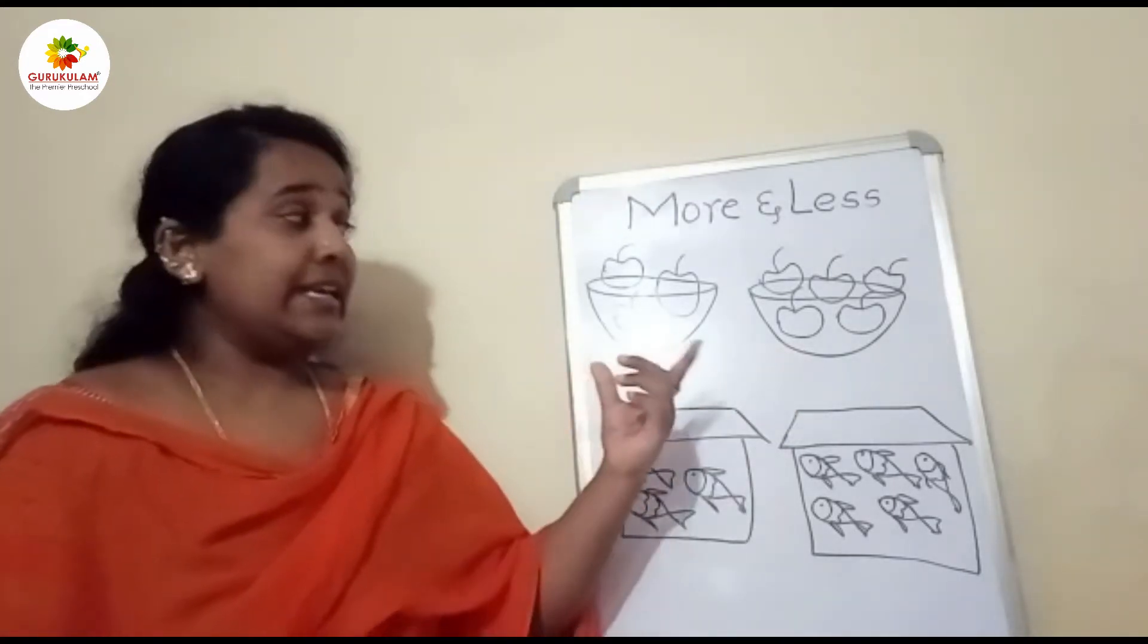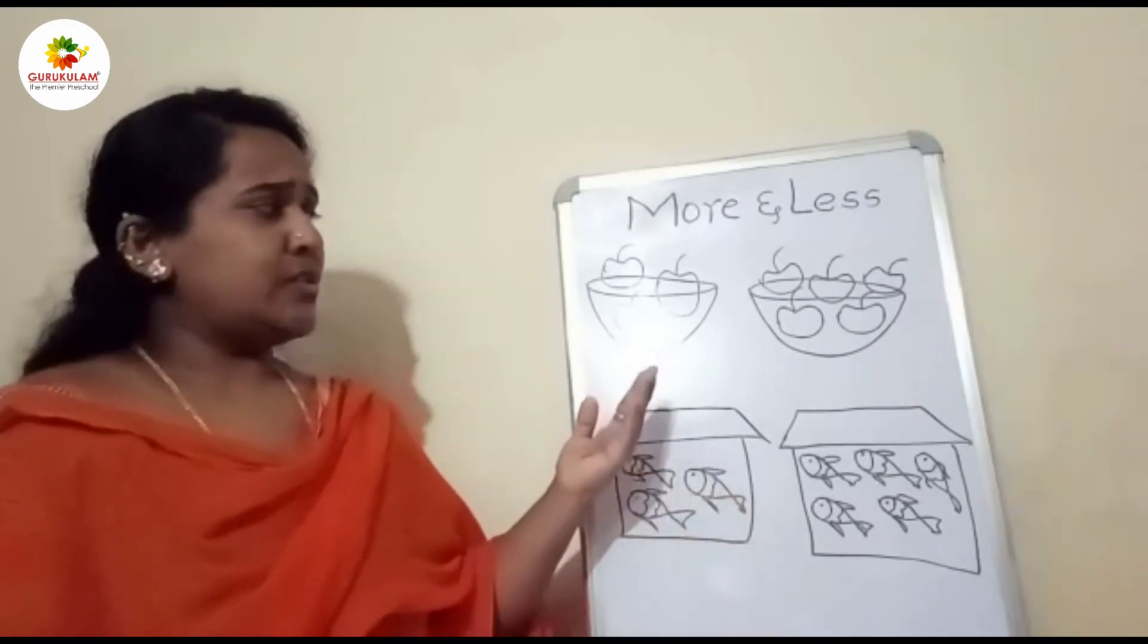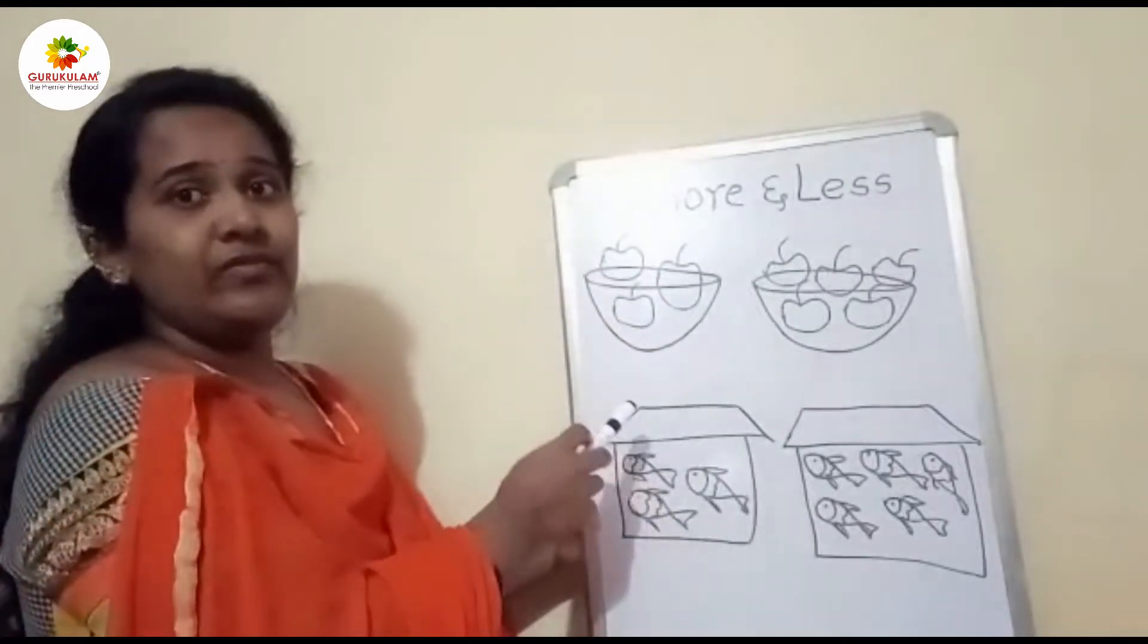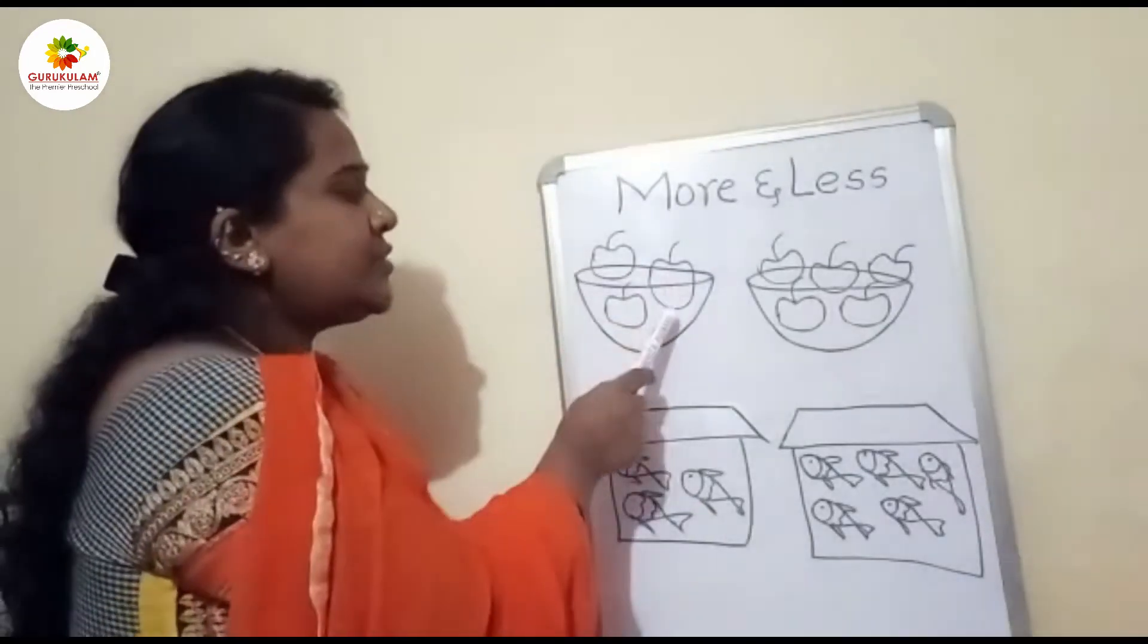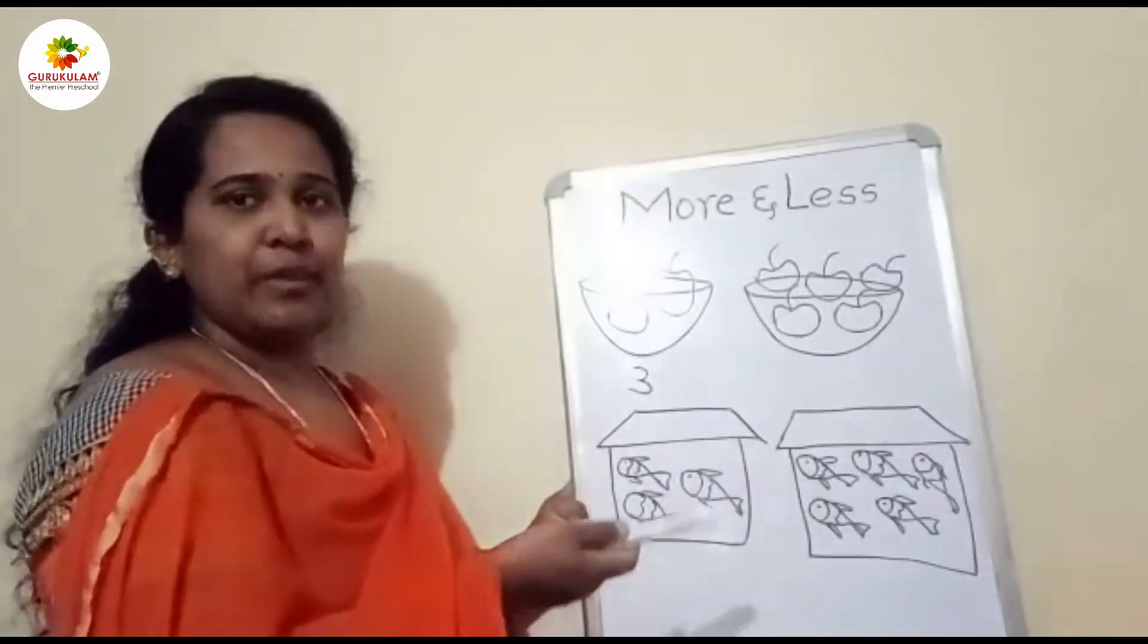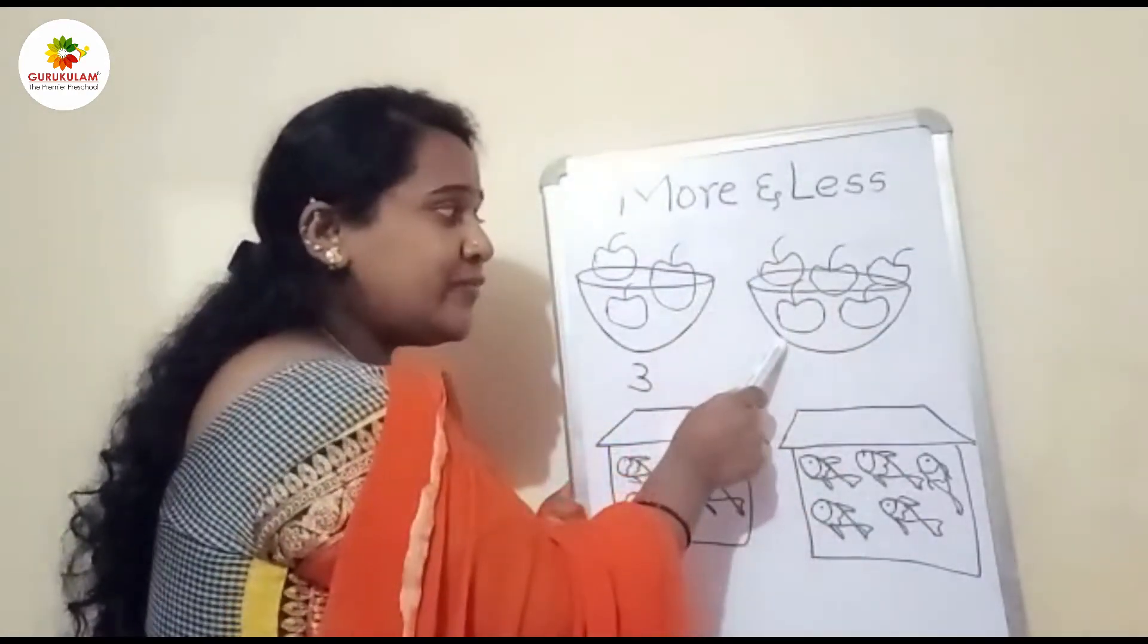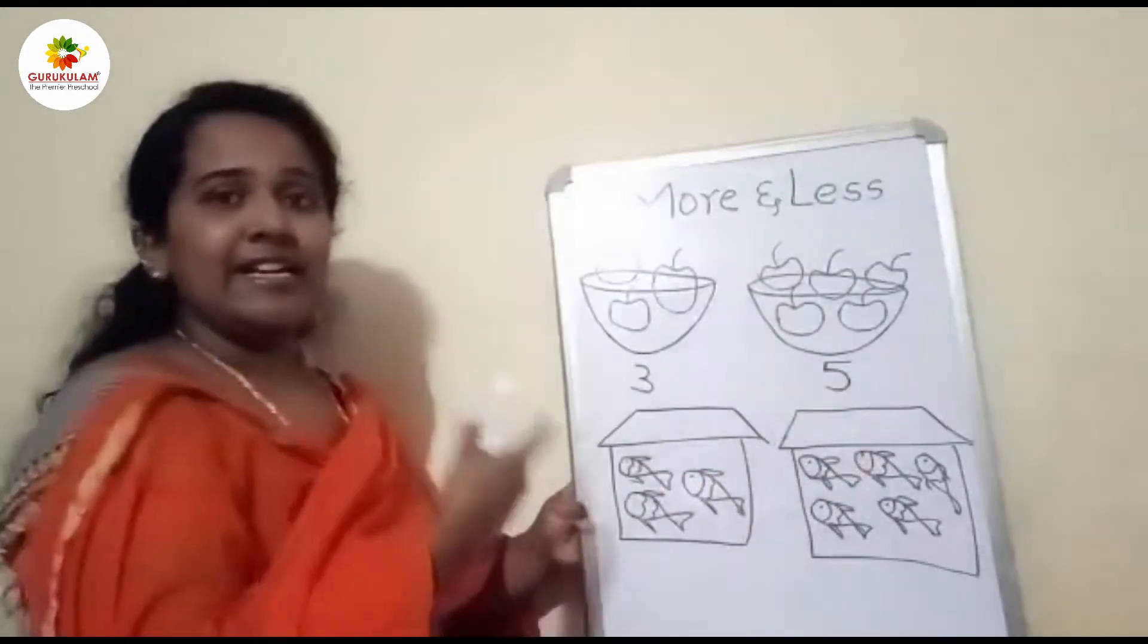Here we have two bowls. In each bowl we have apples. So let's count how many apples are there in each bowl. From the first bowl: one, two, three - three apples. Let's count another bowl: one, two, three, and four, five. In another bowl we have five apples.